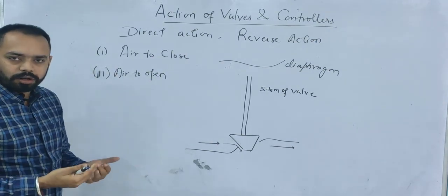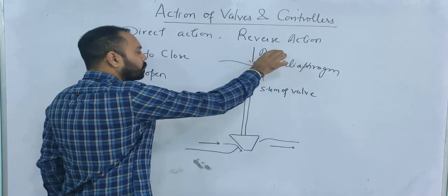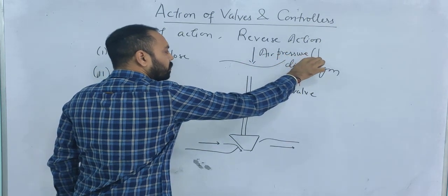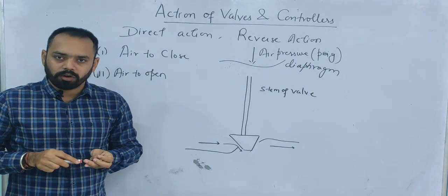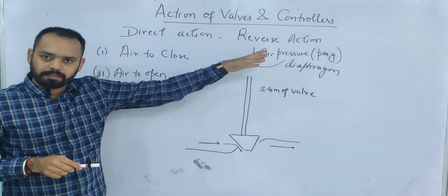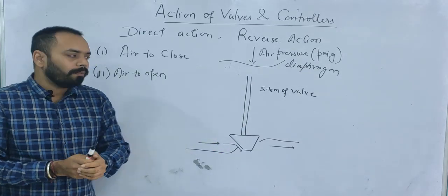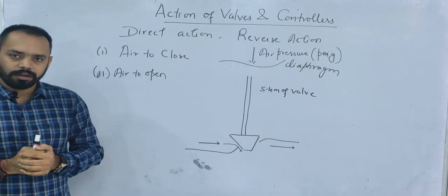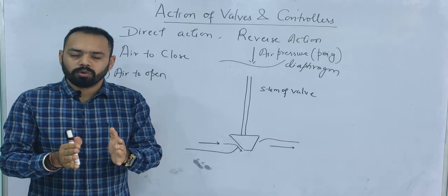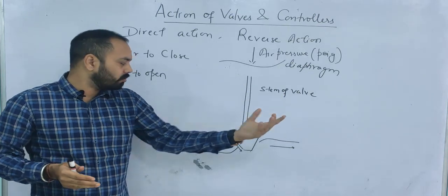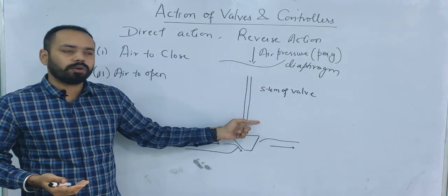If you talk about the classification of valves based on their working — based on the relation between the input air pressure, which is mentioned in psig (g stands for gauge pressure) — these kinds of valves which work on air pressure are called pneumatic valves. In these valves the input is the air pressure, and then you see whether the flow rate increases or decreases. Based on that we have two classic types: air-to-close valve and air-to-open valve.